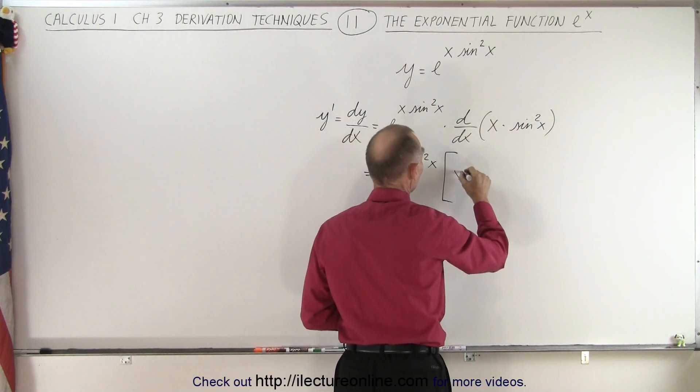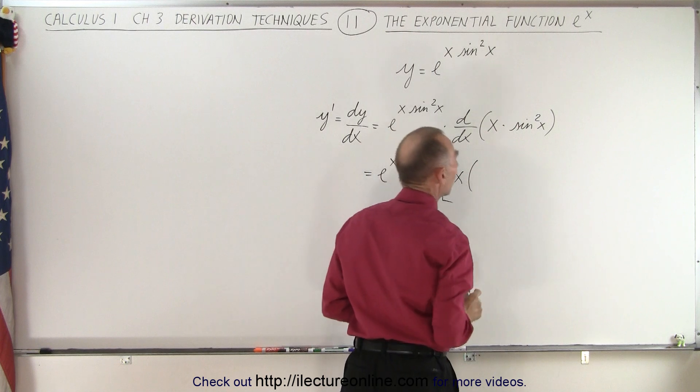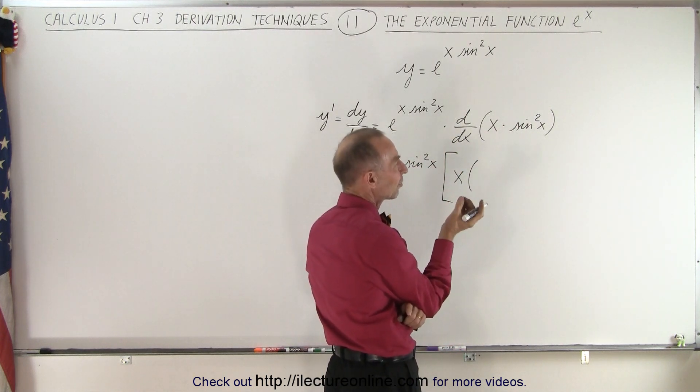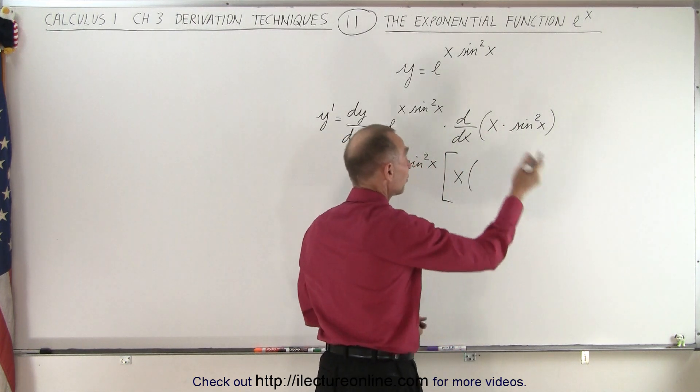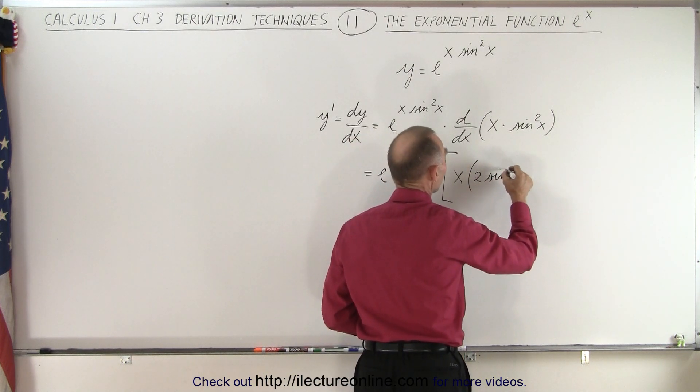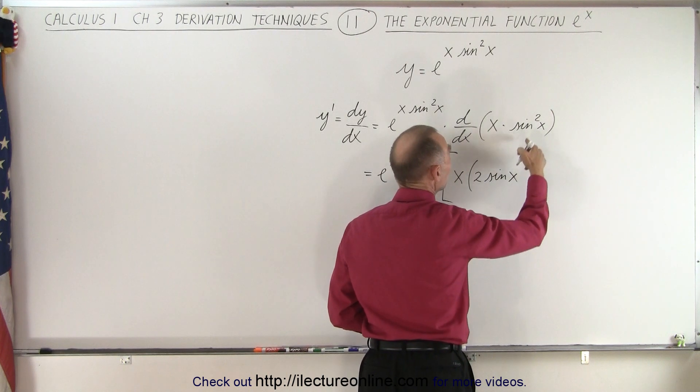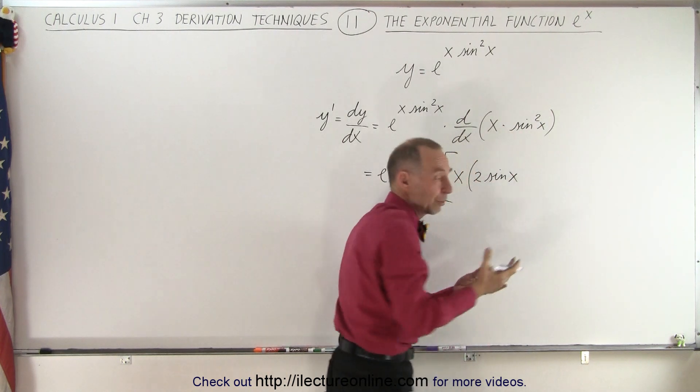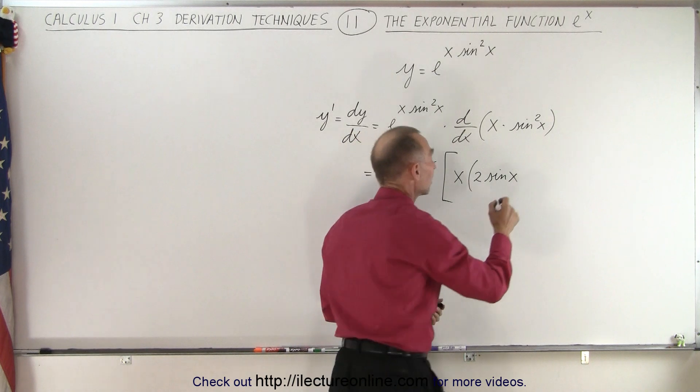We take the first x times the derivative of the second. Now, the second is the sine square of x, so what we do is we take the exponent, put it in front, two times the sine of x to the exponent one less, which is to the first power, which we don't have to write, times the derivative of the sine, which is the cosine of x.